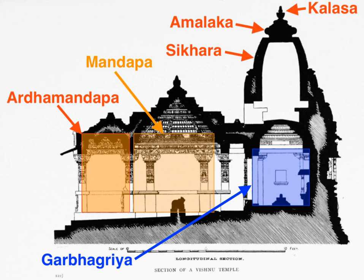A Hindu temple is meant to encourage reflection, facilitate purification of one's mind, and trigger the process of inner realization within the devotee. The specific process is left to the devotee's school of belief. The primary deity of different Hindu temples varies to reflect this spiritual spectrum.